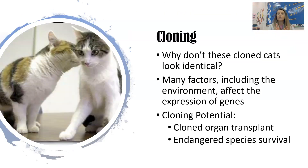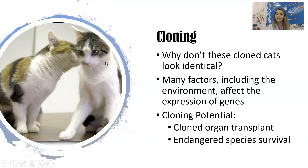Sometimes when you use genetic engineering to clone an organism, the cloned organisms don't look exactly like their original counterpart. These two cats are clones of one another — it's called CC, carbon copy cat — and CC does not look exactly like the cat it was cloned from. We can draw conclusions there: many factors, including the environment, affect the expression of genes.